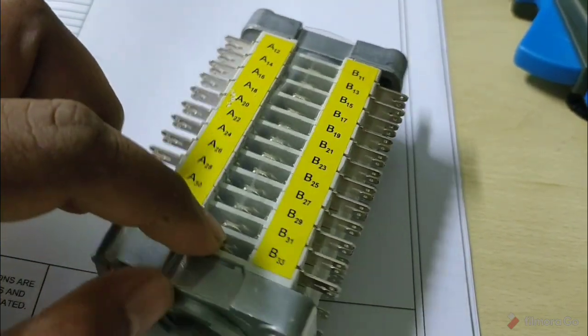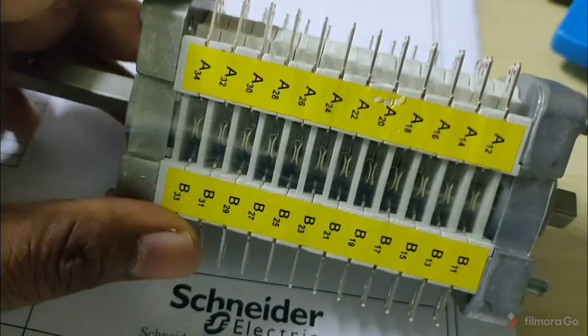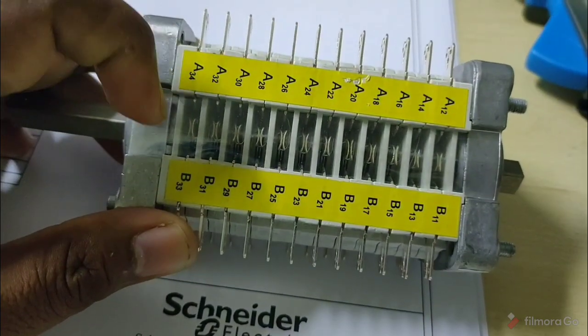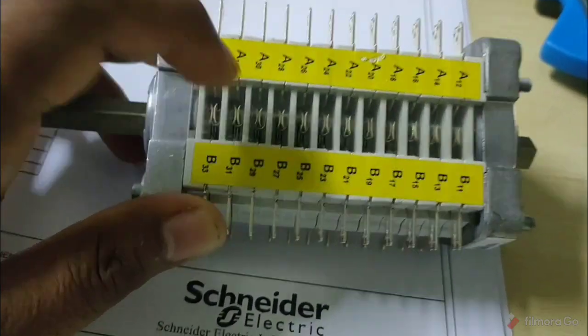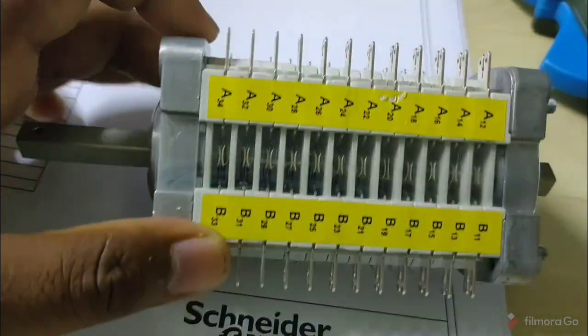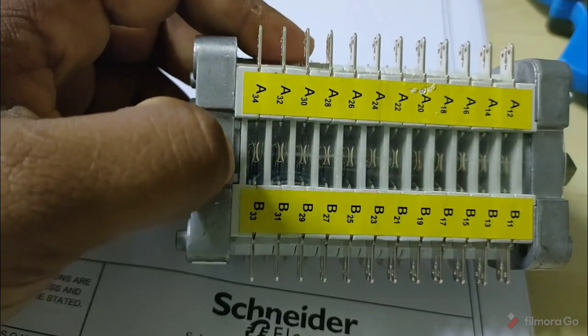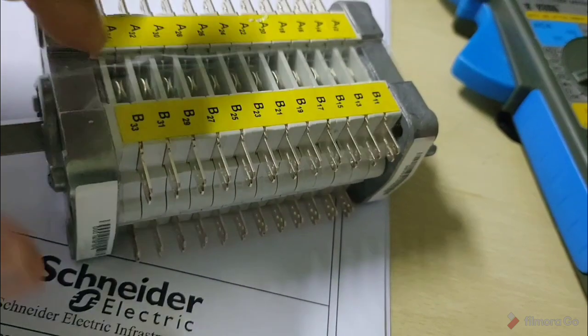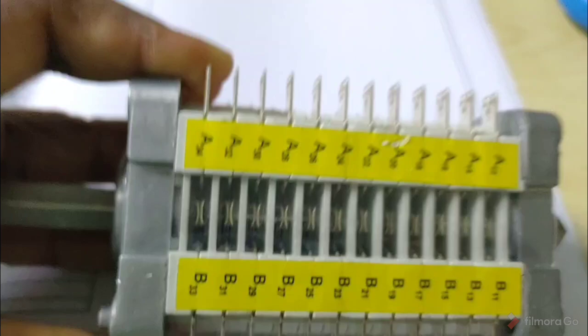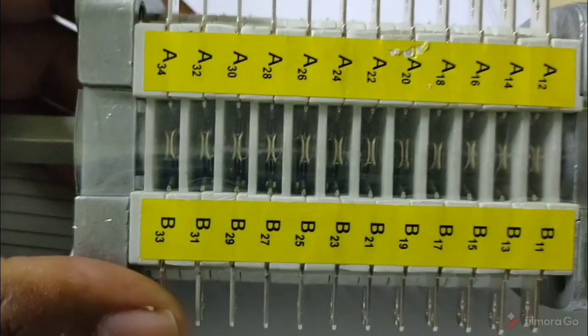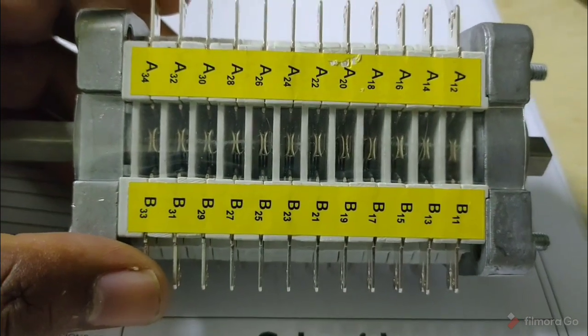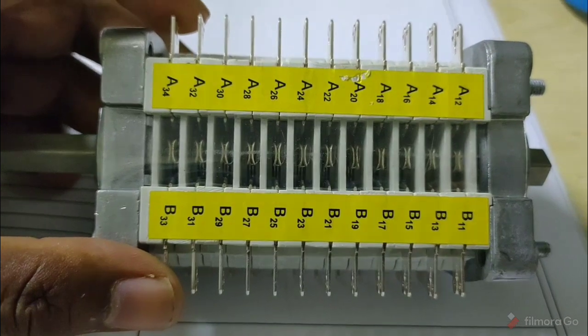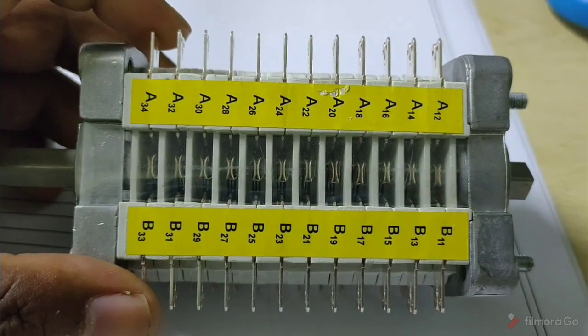You can see the contacts inside through this transparent plastic glass housing, which allows viewing of the internal contacts. Here you can see the A terminals starting with A12.